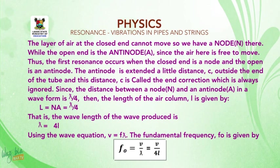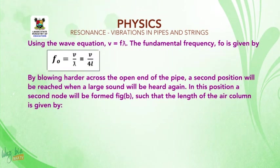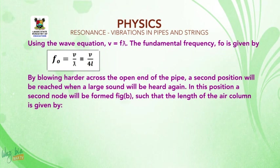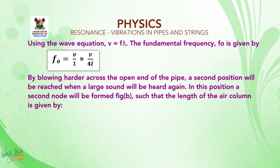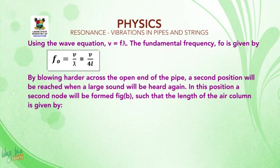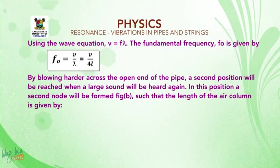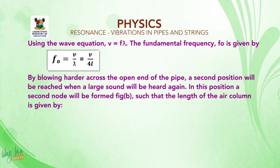Using the wave equation V = Fλ, the fundamental frequency is given by F₀ = V/λ. And when we substitute 4L for λ, F₀ = V/4L, which is the fundamental frequency of the sound produced by a closed pipe.